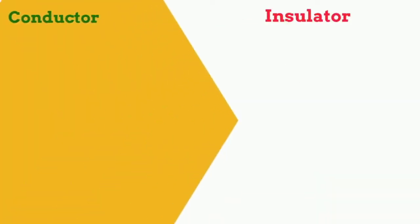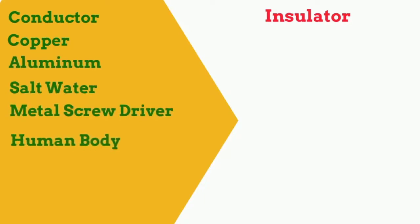So let's summarize what we learned. On the conductor side, and they're green because they allow the flow of electrons, we have copper, aluminum, salt water, the metal portion of a screwdriver. In addition, the human body, iron and silver.